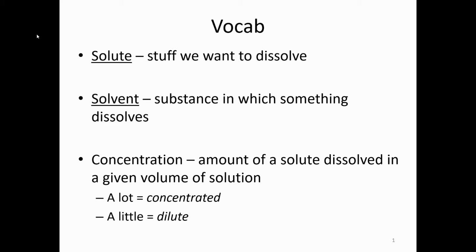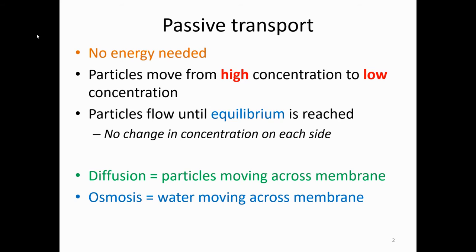When we talk about concentration, we look at whether there's a lot or just a little — is it super concentrated or is it dilute? The first type of transport is called passive transport. It's passive because no energy is needed. Particles are going from a high concentration to a low concentration until equilibrium is reached.